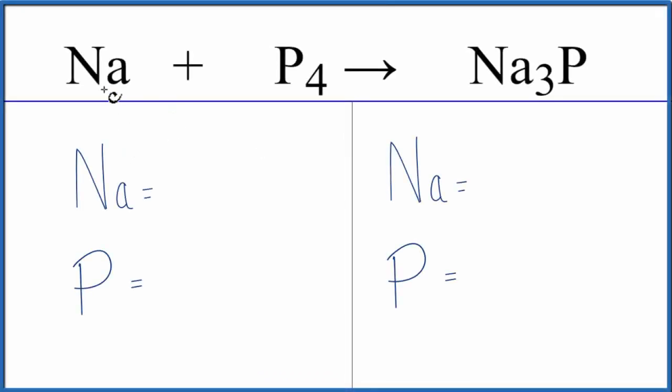In this video, we'll balance the equation for Na plus P₄ yields Na₃P. Let's count the atoms up on each side of the equation.